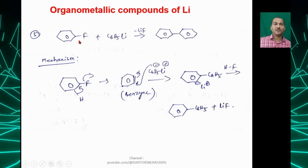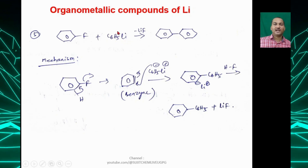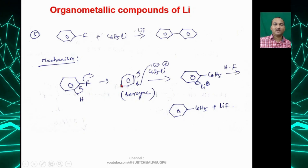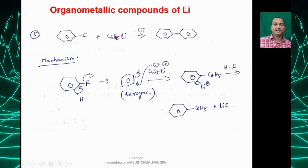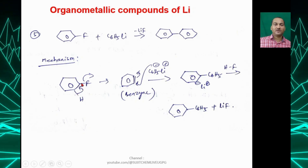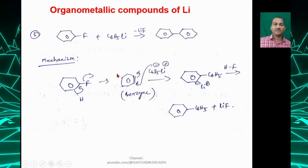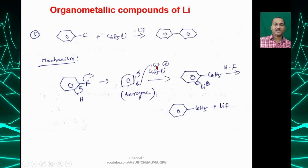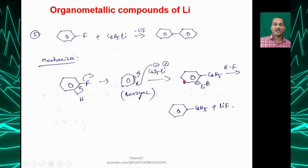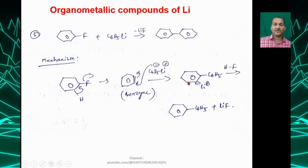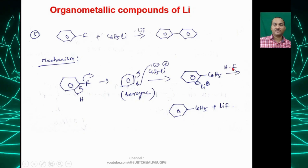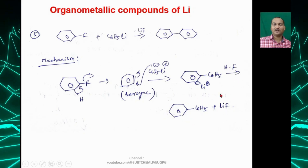Aryl fluorides can react with phenyl lithium to give a diphenyl compound. Ph⁻ takes a hydrogen, the bond moves, and fluorine is kicked out as F⁻ giving benzyne. Then Ph⁻ attacks the benzyne carbon and the double bond breaks on that carbon; the carbon takes a proton from HF to give biphenyl plus lithium fluoride.